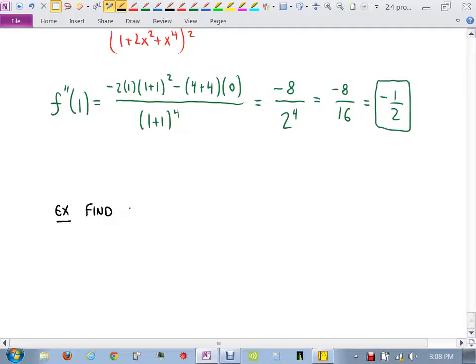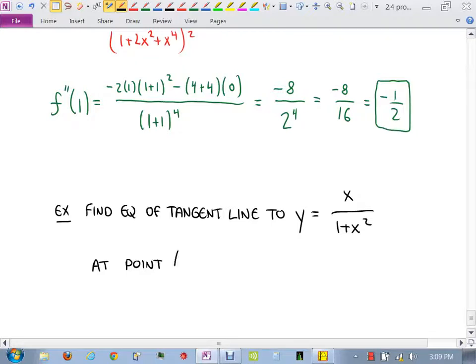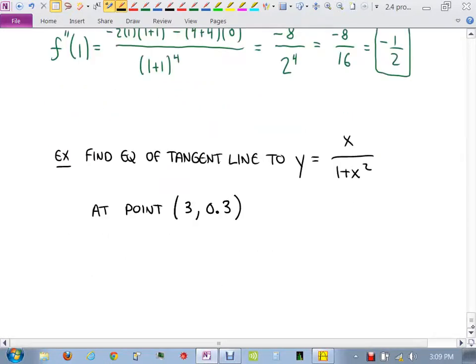Find the equation of the tangent line to the curve y equals x over 1 plus x squared at the point 3, 0.3. So in this problem, we're being asked for the equation of the tangent line. We need y minus y1 equals the slope of the tangent line times x minus x1. That's the equation we're going to wind up using.